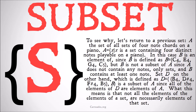Set D, on the other hand, which is defined as the set containing {B4, D♯4, F♯4, B5} and B (not the note, the set), is a subset of A, since all the elements of D are elements of A. All the elements of D are sets — specifically, they are all sets of notes playable on the piano. So the elements of D are all elements of A, meaning D is a subset of A. But D is not a member of A. Whereas B is a member of A, but B is not a subset of A.